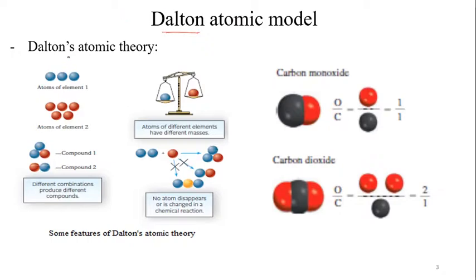Until Dalton made some experiments on the elements. He postulated in his theory that any element contains atoms, and those atoms of the same element would have the same structure, while atoms of different elements are different. The formation of a compound is a combination of elements with a certain ratio, and different ratios give different compounds.